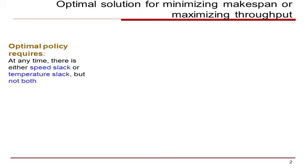First, we present the optimal policy for minimizing makespan of tasks without any deadline constraints. Optimal DVFS policy states, to minimize the makespan of tasks, there should not be a slack in both speed and temperature of a core at any time.